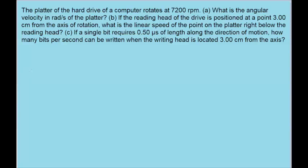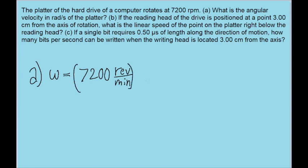In this problem, we're asked about a rotating hard drive platter, and we're solving for a few different things in each part of the problem. The first part asks us to find the angular velocity of the platter in radians per second. We're actually already given the angular velocity of the platter, 7200, but we're given it in revolutions per minute. We want to find it in radians per second, so this first part is going to be a simple unit conversion issue.